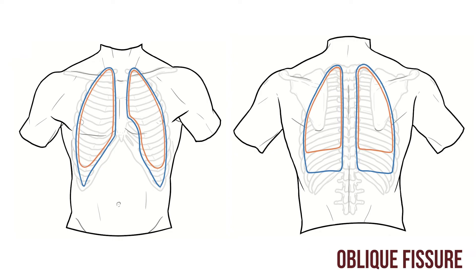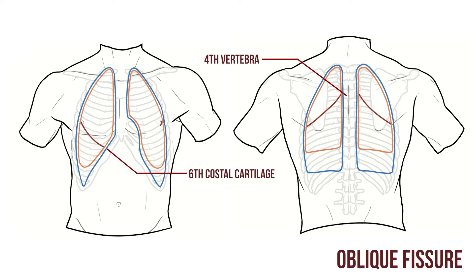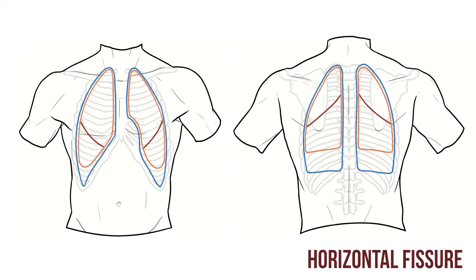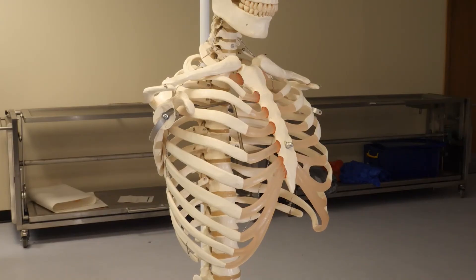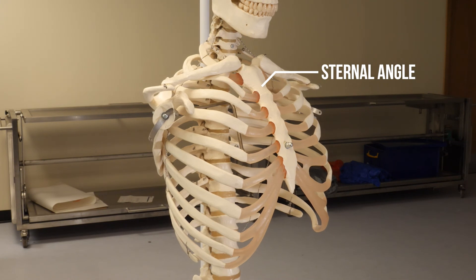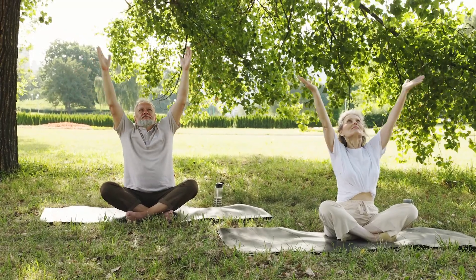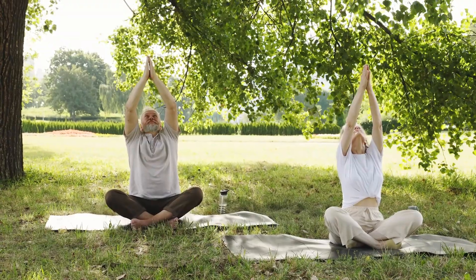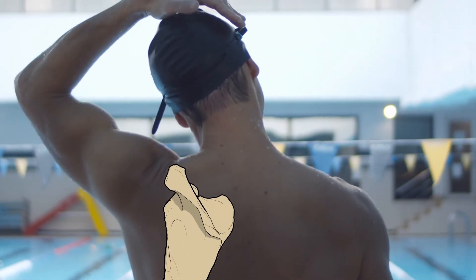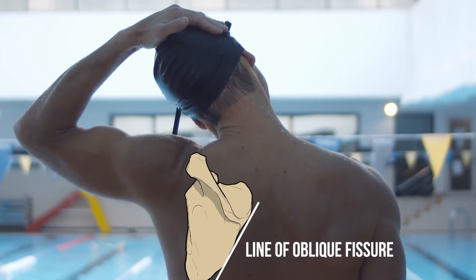On both sides an oblique fissure divides the lung into upper and lower lobes. These fissures run from the fourth vertebra posteriorly to the sixth costal cartilage anteriorly. Then on the right only, a horizontal fissure follows the line of the fourth rib, creating a third middle lobe. You can find these landmarks on a patient using the sternal angle — draw an imaginary horizontal line through the angle and T4 should be just above it. You can also find the oblique fissure by abducting the upper limb above the head; as the limb moves up and the scapula rotates laterally, the medial border ends up in line with the oblique fissure.